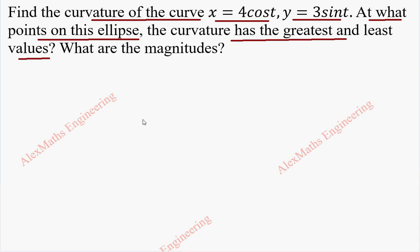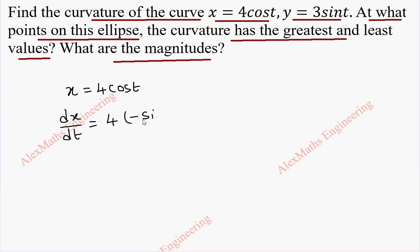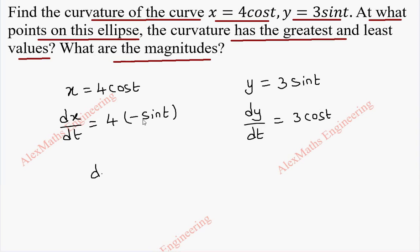We are going to find the points and also the magnitude of the radius of curvature. So we take x = 4cos(t) and differentiate: dx/dt = 4·(−sin t). Then y = 3sin(t), so dy/dt = 3cos(t). Now, dy/dx = 3cos(t) / (−4sin(t)).